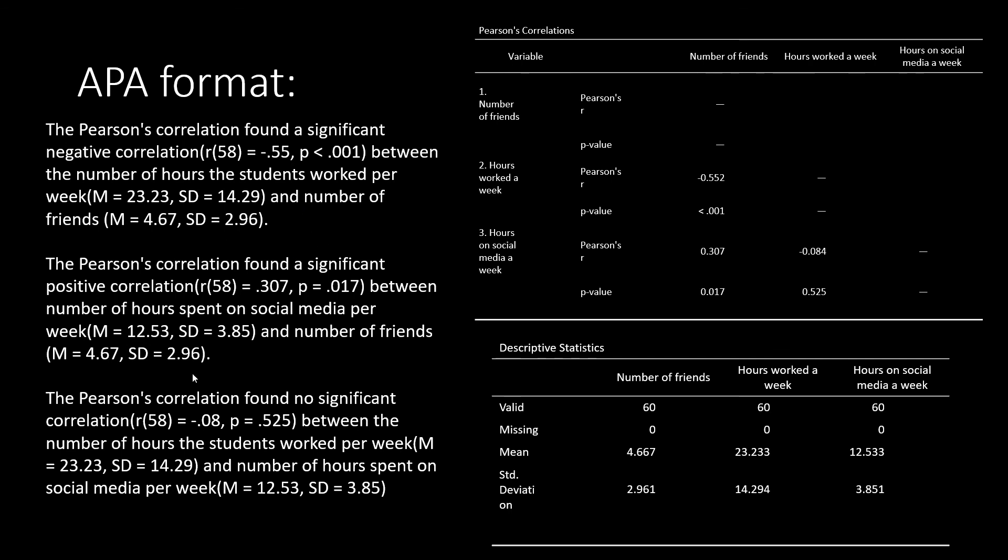And as you'll see in these examples, I've repeated that same thing for each of these different correlations. In our second example, we have a significant positive correlation between two variables, and I've reported all of the relevant information. In the last example, we have an insignificant correlation, and so we're going to denote that it's not significant, and we're going to report that it has no direction.